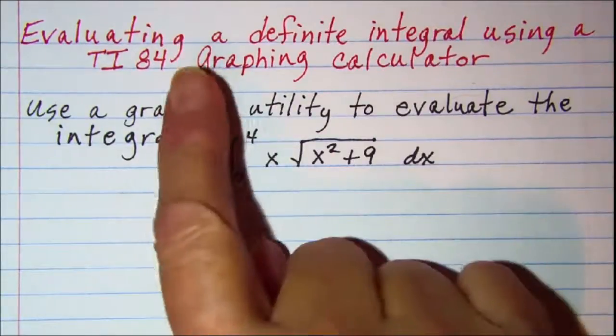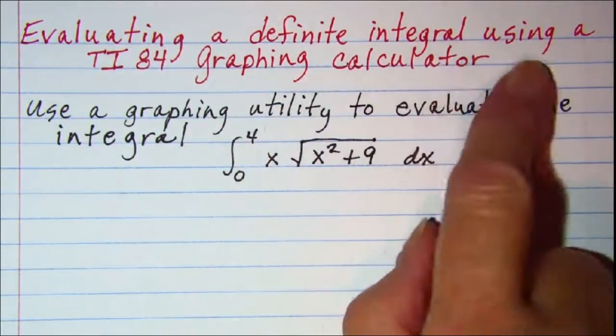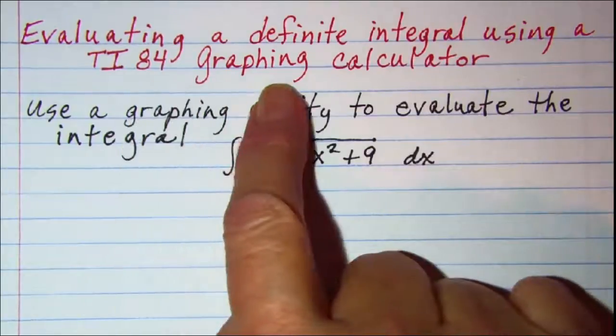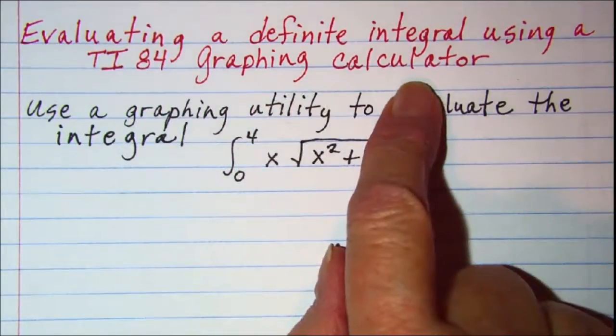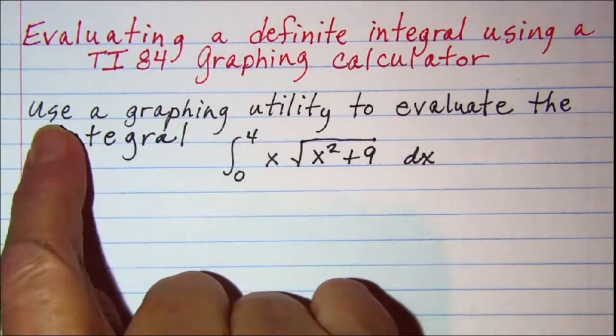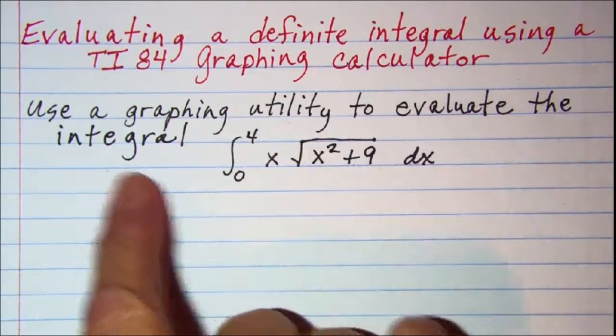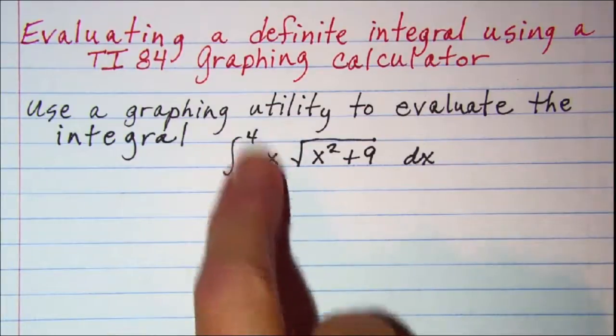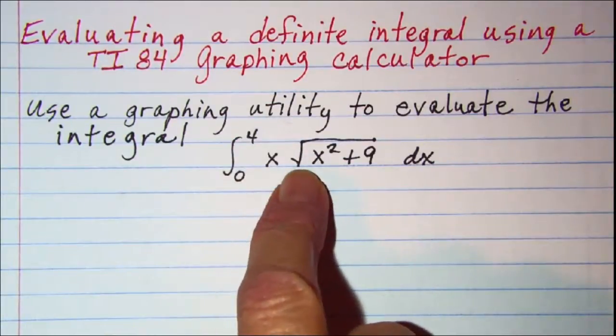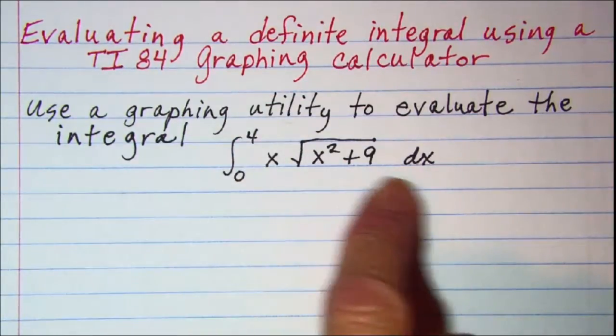In this video we'll be evaluating a definite integral using a TI-84 graphing calculator. The problem is to use a graphing utility to evaluate the integral from 0 to 4 of x times the square root of x squared plus 9 dx.